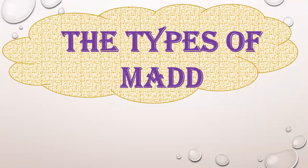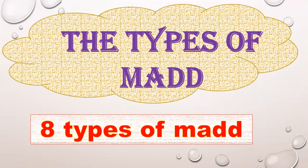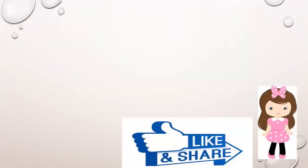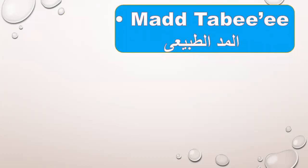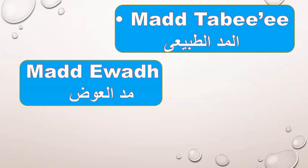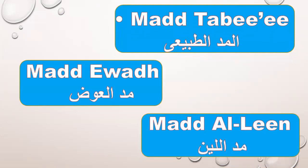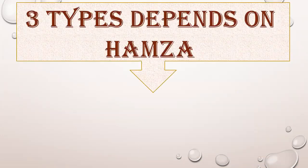Ahkamu al-madi wa anwa'u al-mad. I told you before there are eight types of mad. We studied together six types. We studied Mad Tabi'i, Mad al-Tabi'i, and Mad al-Iwaad. And we studied together three types of mad dependent on Hamza.